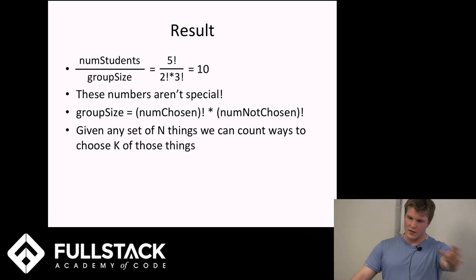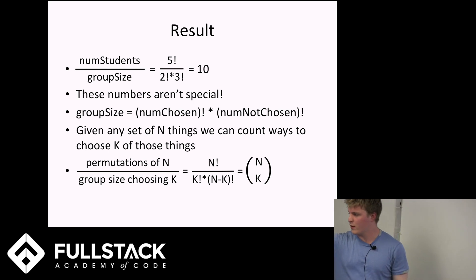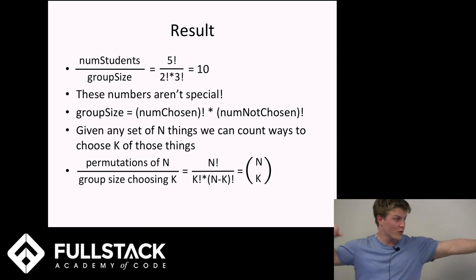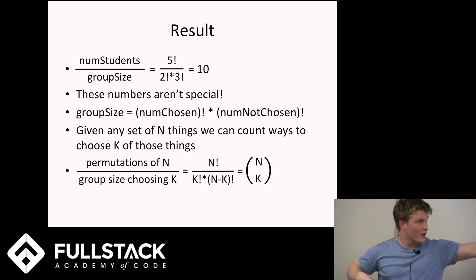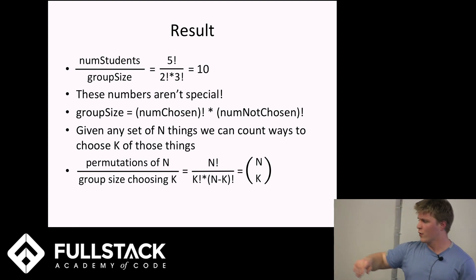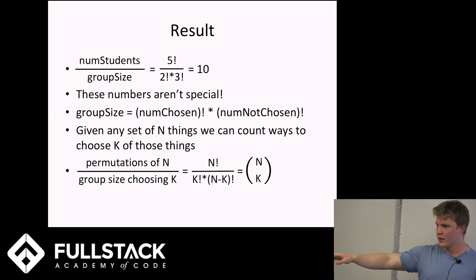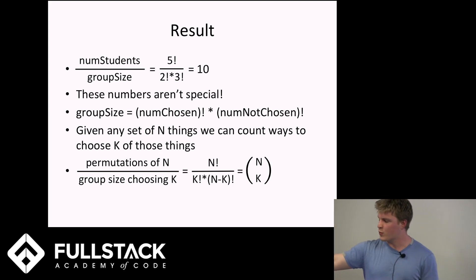Given any set of n things and choosing k of them, we have the formula: n factorial divided by k factorial times (n minus k) factorial. The big parentheses notation at the end is just the standard mathematical notation people use to express that same formula — it's called 'n choose k.'